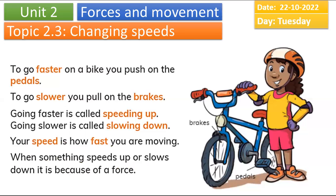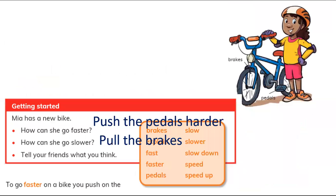Let's answer some questions. How can you make this bike faster? Push the pedals harder. How can you make the bike slower? Pull the brakes. So here are the two forces — pull and push — that make things slower and faster.